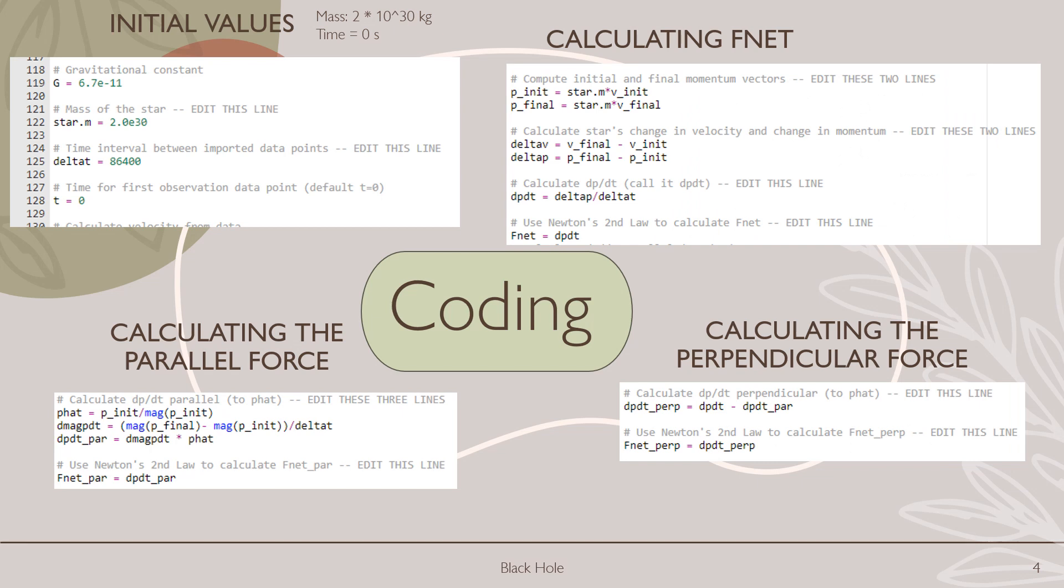Now to the coding, the part we all love. We'll start at the top left, our initial values. Our initial values, we have our gravitational constant and the star's mass. Delta t is set to 86,400 seconds, and that is the number of seconds in a day. Now if you look at the top right, we're going to calculate the net force, and the net force is calculated by finding delta v and delta p, and then we're taking delta p and dividing it by delta t to get dp/dt, which is our net force.